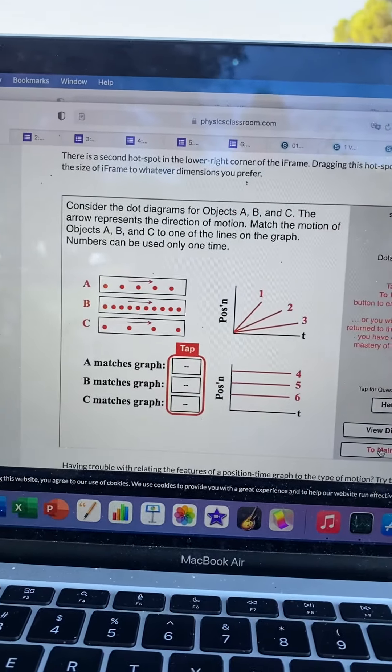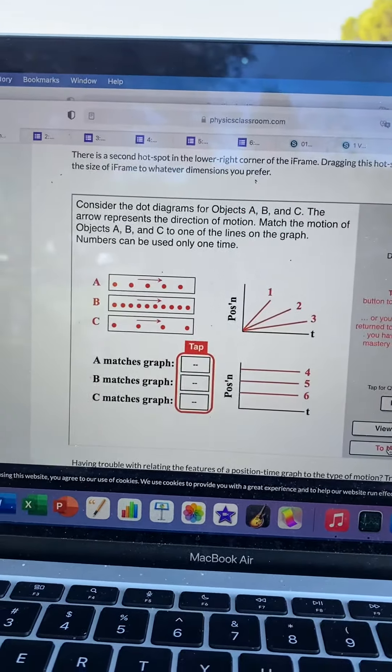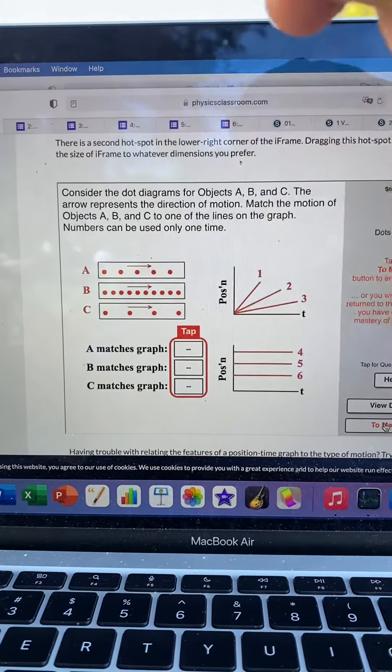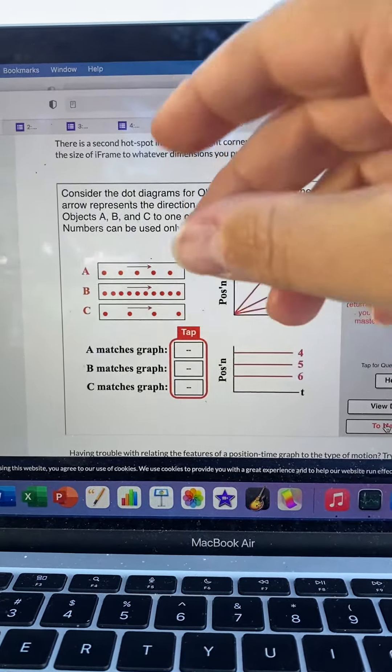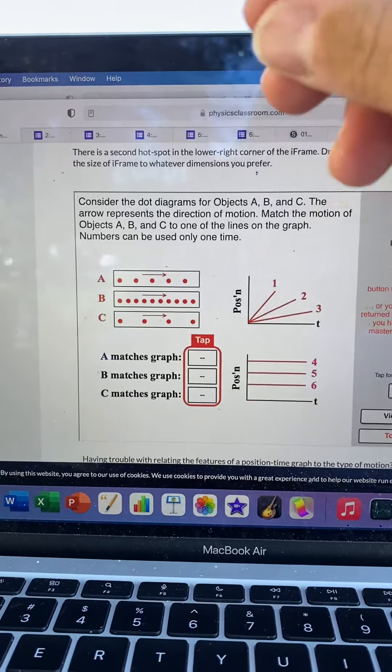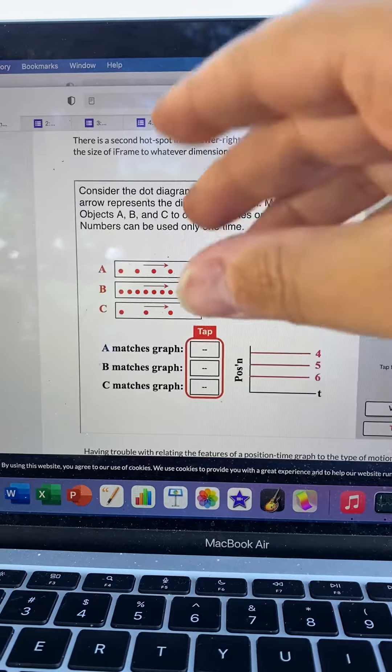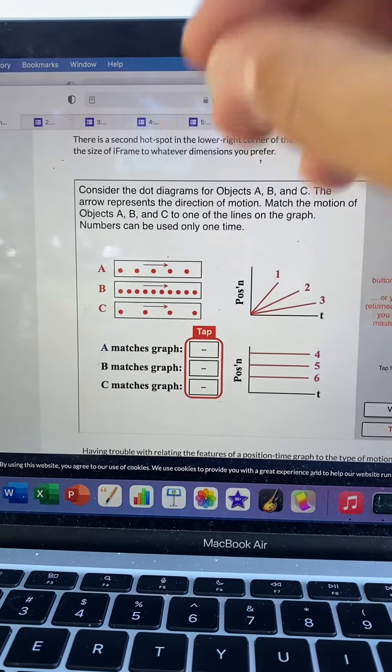The way I like to think about these is like breadcrumbs. If you were in a car and you reached your hand out the window and you were dropping a breadcrumb every second, the faster you're going, the further away those breadcrumbs would be, right? Because if you're going faster, what's happening is more distance is being covered each second.